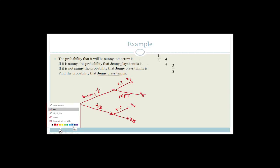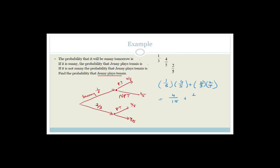Calculate the probability that Jenny plays tennis: it's the probability of sunny multiplied by the probability she'll play tennis, plus the probability it's not sunny multiplied by the probability she will play tennis. That is (1/3 × 4/5) + (2/3 × 2/5) = 4/15 + 4/15 = 8/15. So the probability that Jenny will play tennis is 8 out of 15.